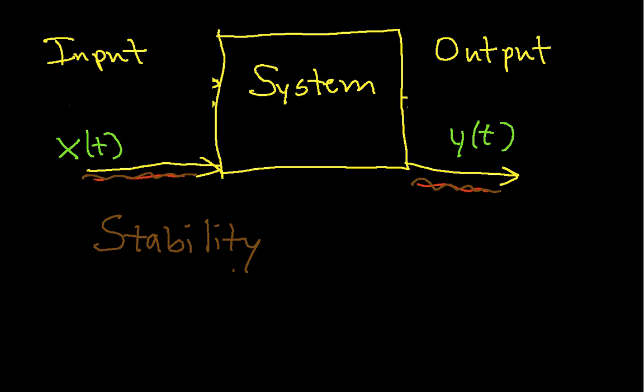If the cruise control is a stable system, then as long as this input value stays below, well, stays bounded, then the output value will stay bounded. So that's a good thing, particularly when you're talking about the cruise control on your car.